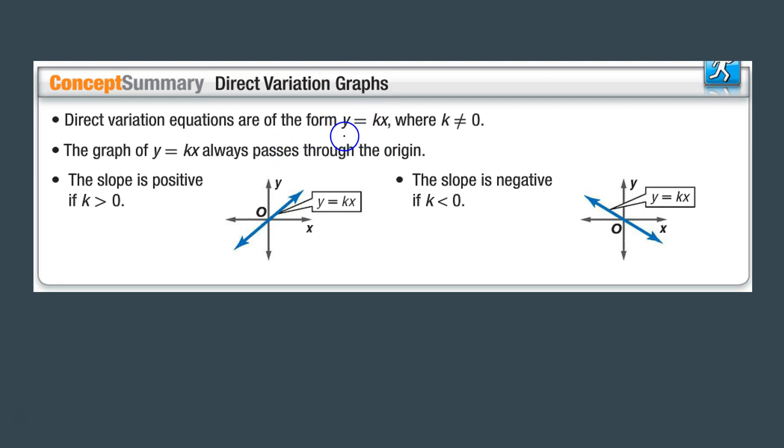Direct variation graphs. Direct variation equations are in the form of y equals kx, and this is where it's important: k cannot equal 0.